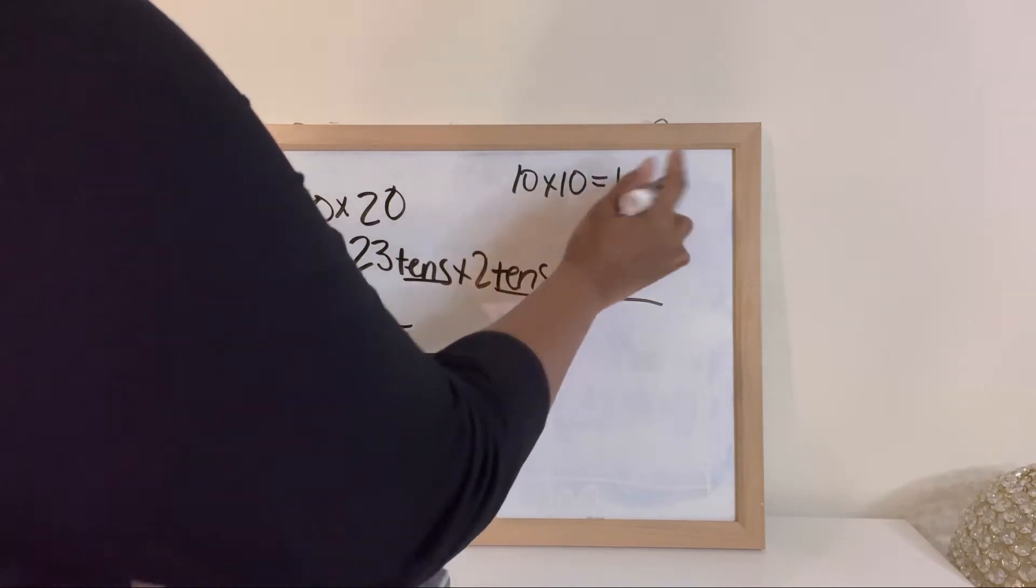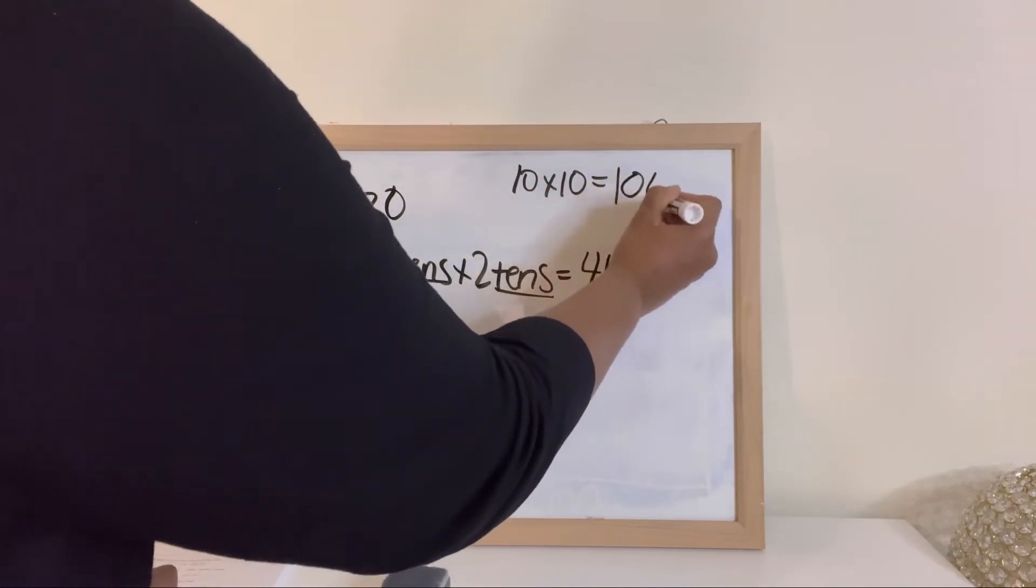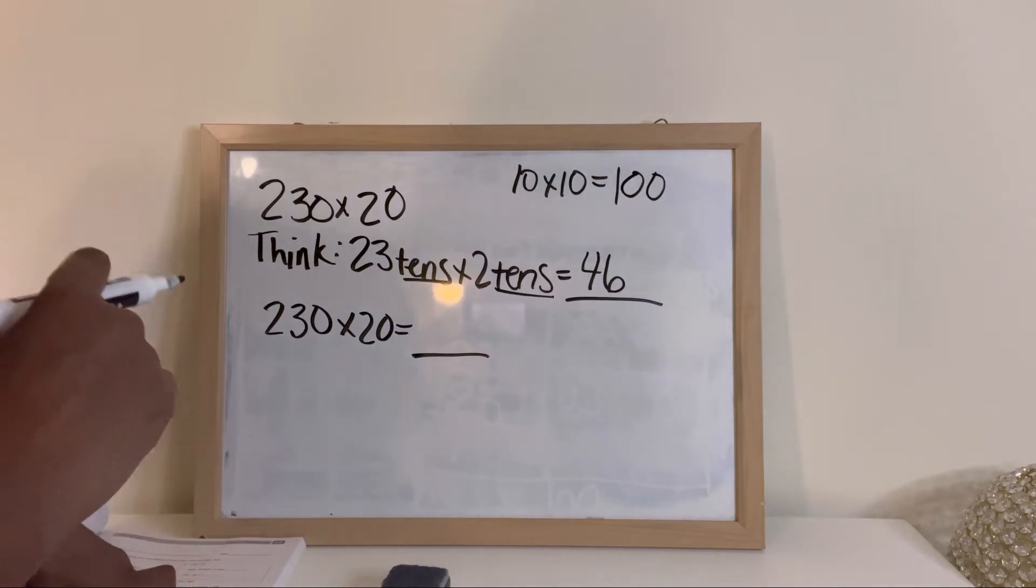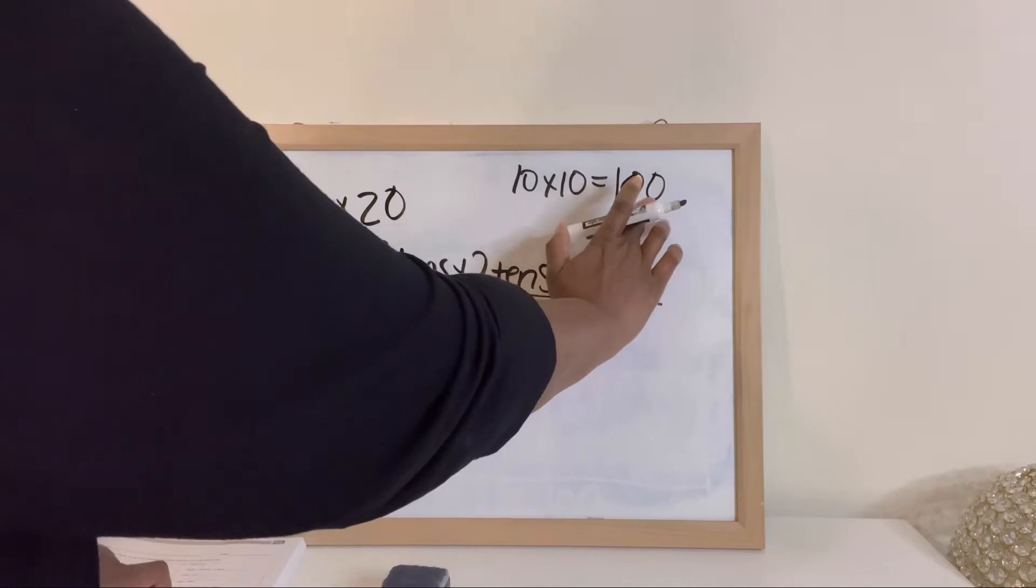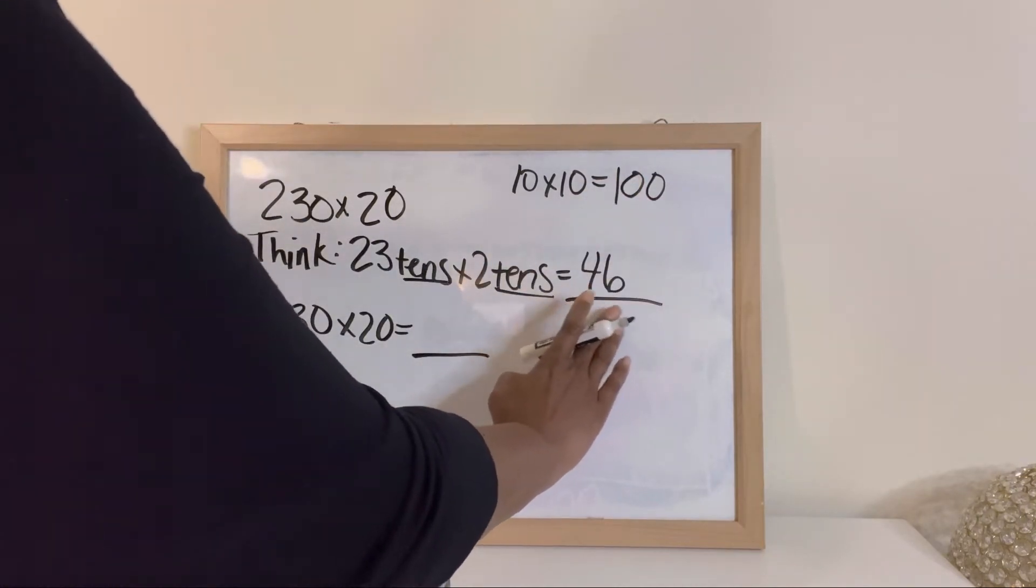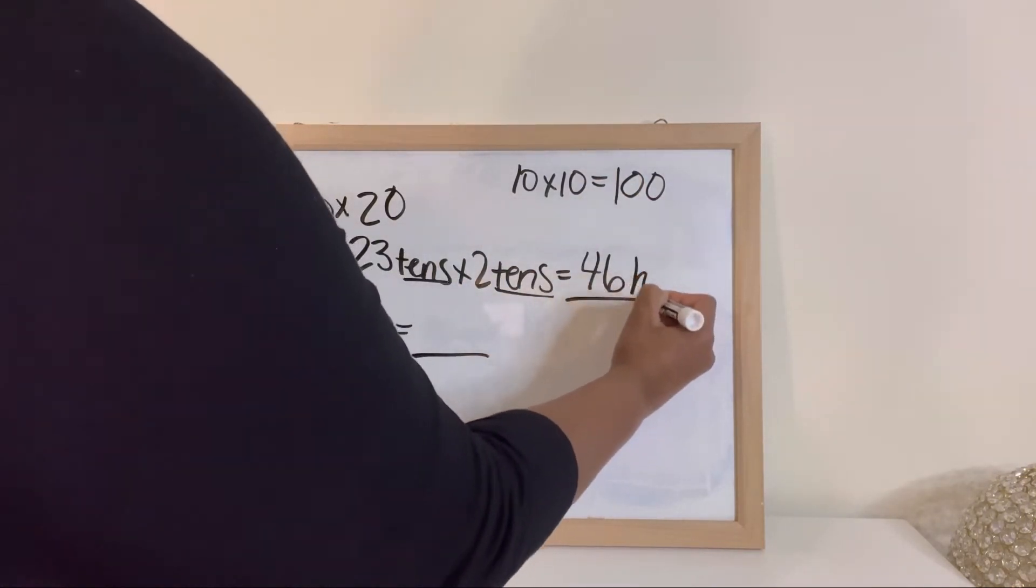So you'll do 1, 2. So then you'll write 1, 2 to your answer. So we just found out that tens times tens gives you hundreds. So you're gonna write 46 hundreds.